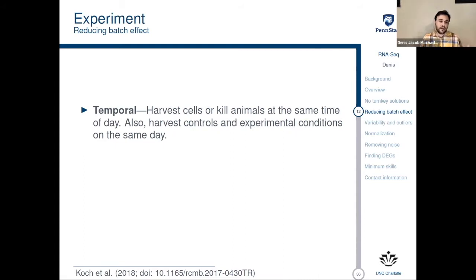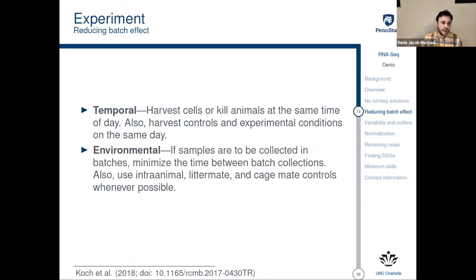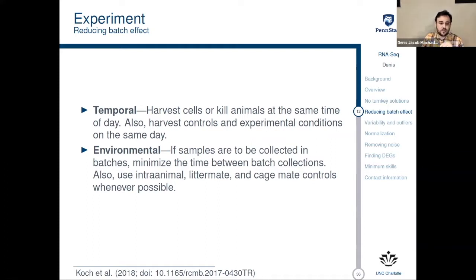When doing the experiment, you have to control for temporal variables. You will have to harvest or sacrifice animals at the same time of the day. You have to think about harvesting controls and experimental conditions on the same day. If samples are to be collected in batches, minimize the time between batch collections. Intra-animal, litter-mate, and cage-mate controls should be used whenever possible. Having a tight schedule and following it to the letter is extremely important at this stage.